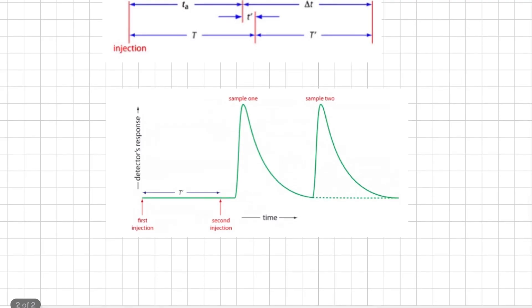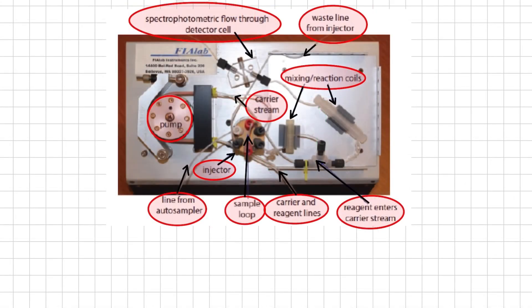The basic components of a flow injection analyzer are shown in this figure. First, there is a pump used for propelling the carrier stream and reagent stream. Second, there is a means for injecting the sample into the carrier stream. Third, there is a detector used for monitoring the composition of the carrier stream. Connecting these units is a transport system that brings together separate channels, provides time for the sample to mix with the carrier stream, and allows it to react with the reagent stream. There are two mixing and reaction coils in this configuration.